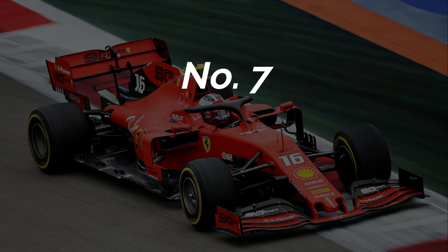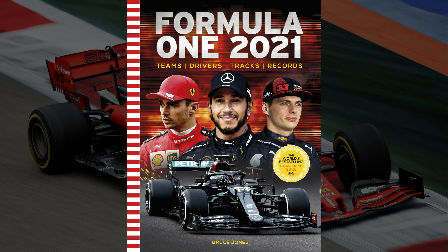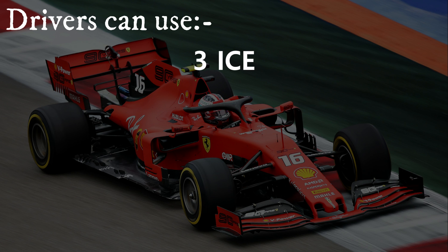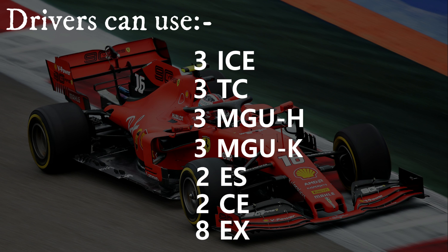And lastly, we have number seven: EX, or engine exhaust system. For the 2021 Formula 1 season, drivers can use three internal combustion engines, three turbochargers, three MGUH, three MGUK, two energy stores, two control electronics systems, and eight engine exhaust systems.